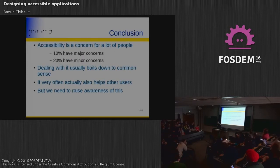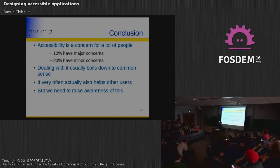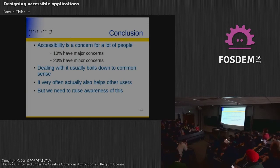To conclude: accessibility is really a concern for a lot of people. About 10% of people would say they have major concerns, but 20% would say there are some things they cannot do — and they would not consider themselves handicapped, but still, some things they wouldn't do. Quite often it's just a question of common sense: do things logically, simply, and configurably, and then it would be nice for everybody — not only people with disabilities, but also your regular users. We just need to raise awareness so that everybody thinks about it all the time. Thank you.